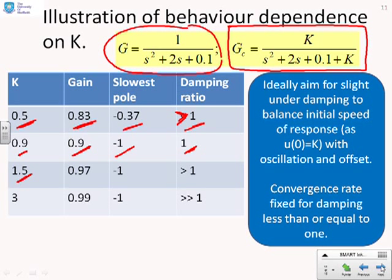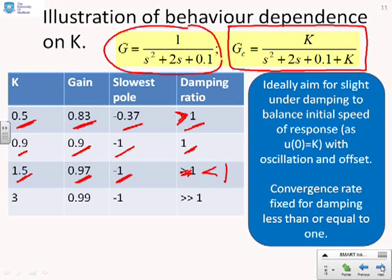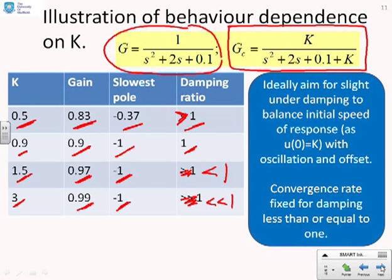If k goes bigger than the critical damping value, the offset is reduced — the steady-state gain is now 0.97 — the slowest pole remains the same as with critical damping, and the system is now underdamped. At k equals 3, the steady-state gain is up to 0.99 with very small offset, the slowest pole is still minus 1, so it converges well, but there will be significant oscillation.